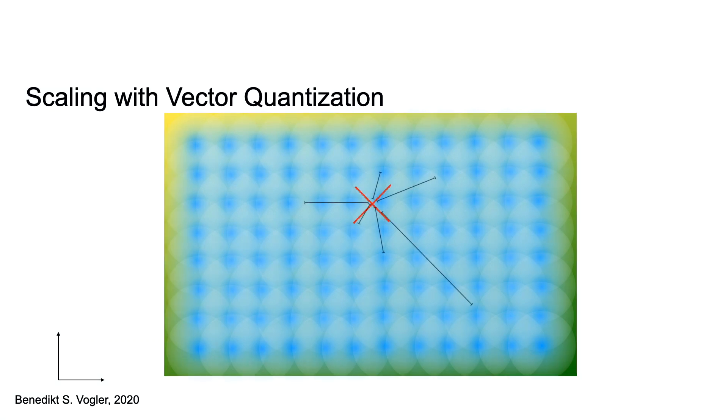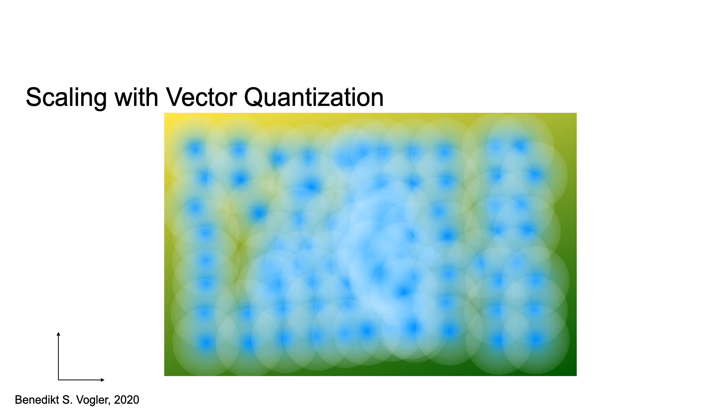With each sample, we measure the distance to every place field. Based on the distance, the place fields are then moved towards the sample. This is then repeated for every sample, until the space is covered non-uniformly.